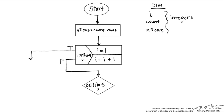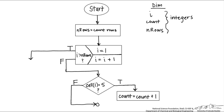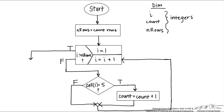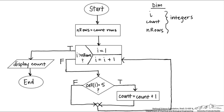We ask: is cell i equal to 5? If true, count equals count plus 1 — we increment count by 1. If false, we do nothing and move along to the next row. We increment i back up, and when i exceeds the number of rows, we are done. The last thing we need to do is display count — showing the user how many 5's are in the vector.